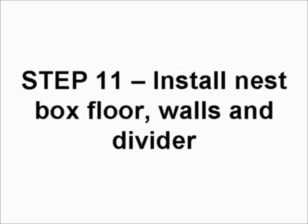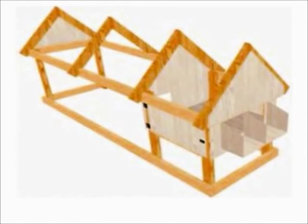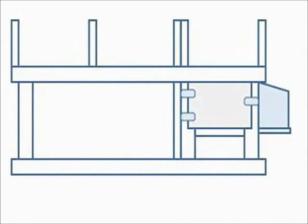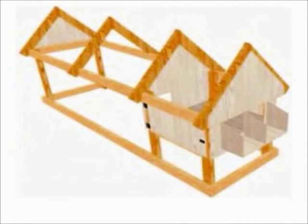Step eleven, install the nest box floor, walls and divider. The floor measures 10 inches by 25 inches and is attached directly to the back wall. The nest box sides and divider measure 10 inches by 14 and a half inches.